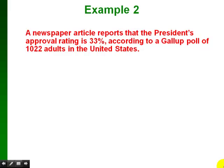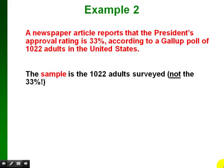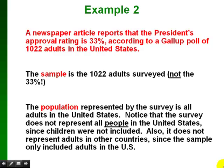Another example: a newspaper article reports the President's approval rating is 33% according to a Gallup poll of 1,022 adults in the United States. The sample is all 1,022 adults surveyed, not just the 33%. The population represented is all adults in the United States. The survey does not represent all people in the United States because children were not included, and it doesn't represent adults in other countries since the sample only included adults in the U.S.